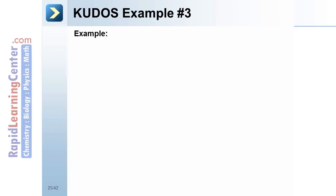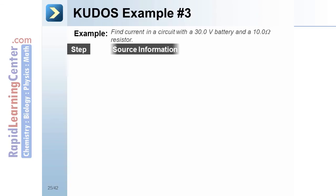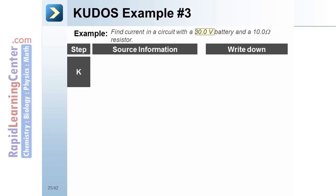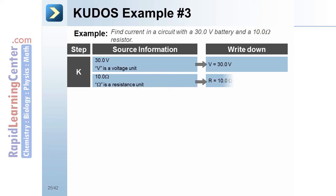KUDOS example number three. Find the current of a circuit with a 30.0 volt battery and a 10.0 ohm resistor. For the known, we are given 30.0 volts, that's a voltage. We are also given 10.0 ohms, that's a resistance.